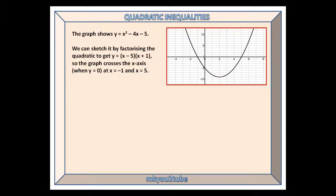Quadratic inequalities. The graph shows y equals x squared minus 4x minus 5. We can sketch it by factorising the quadratic to get y equals x minus 5 times x plus 1, so the graph crosses the x-axis when y is 0, at x equals minus 1 and x equals 5.